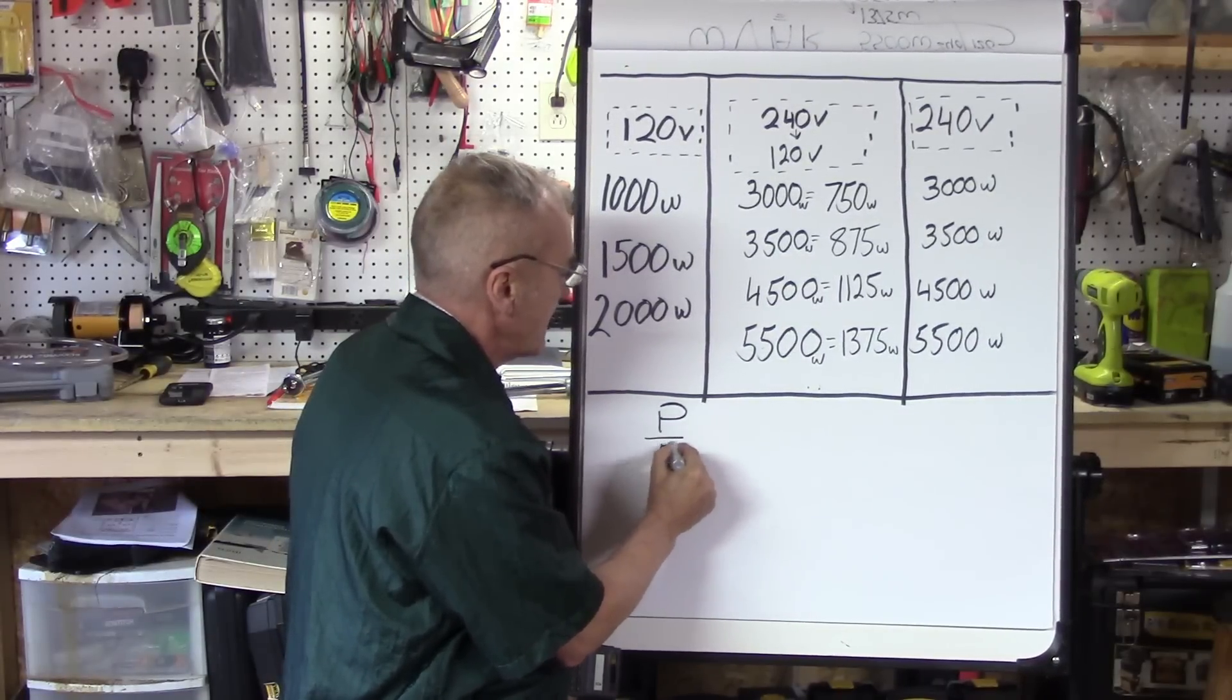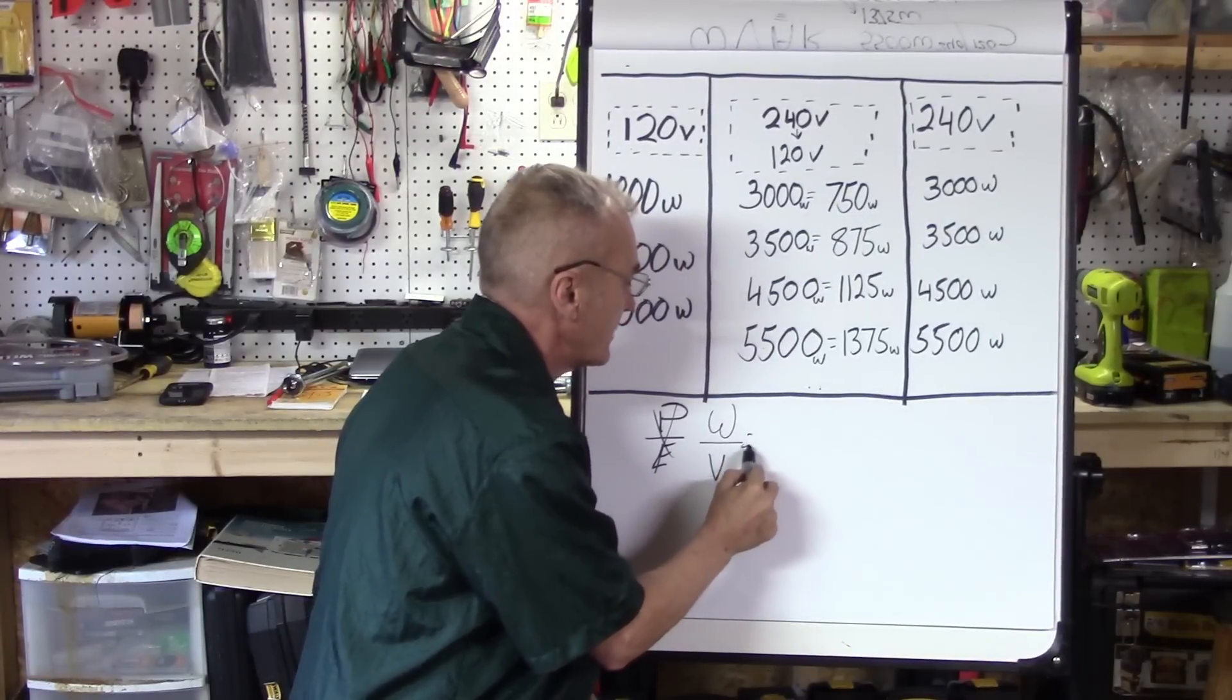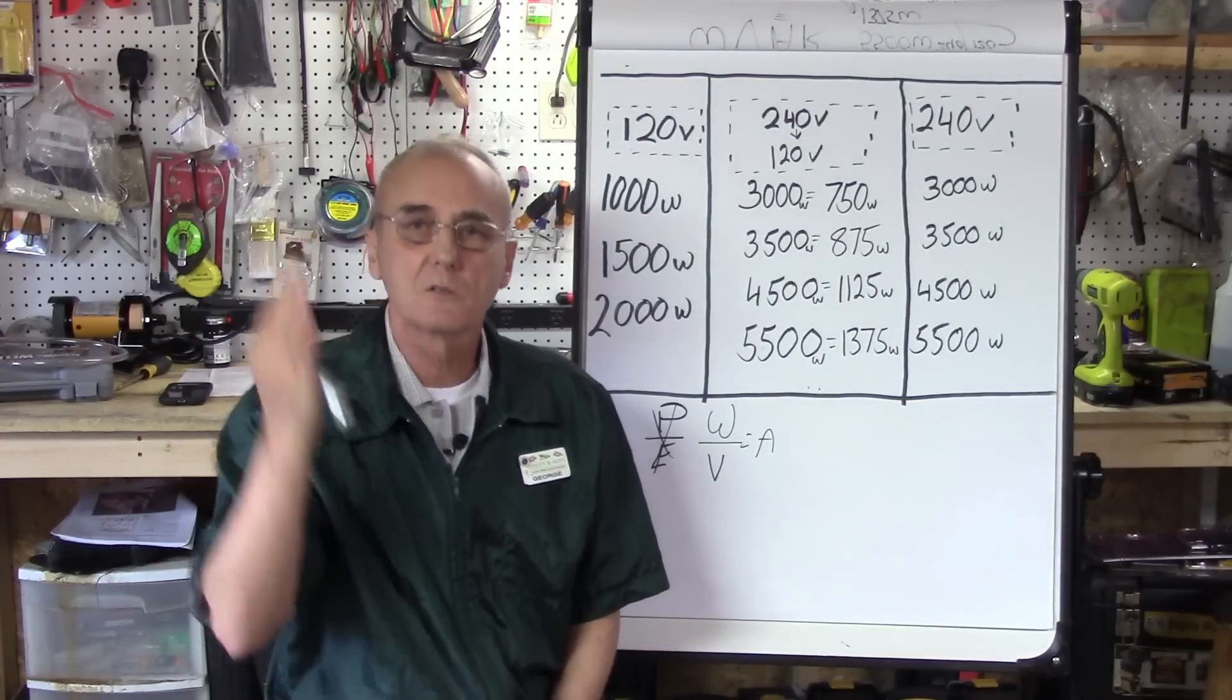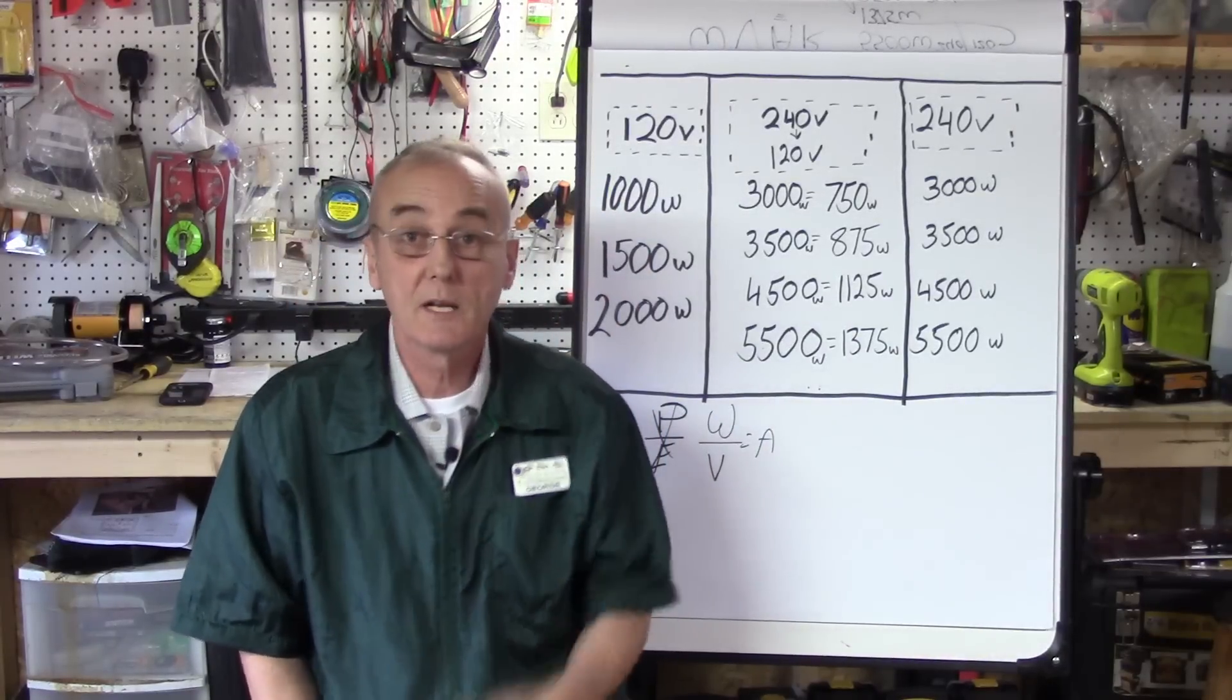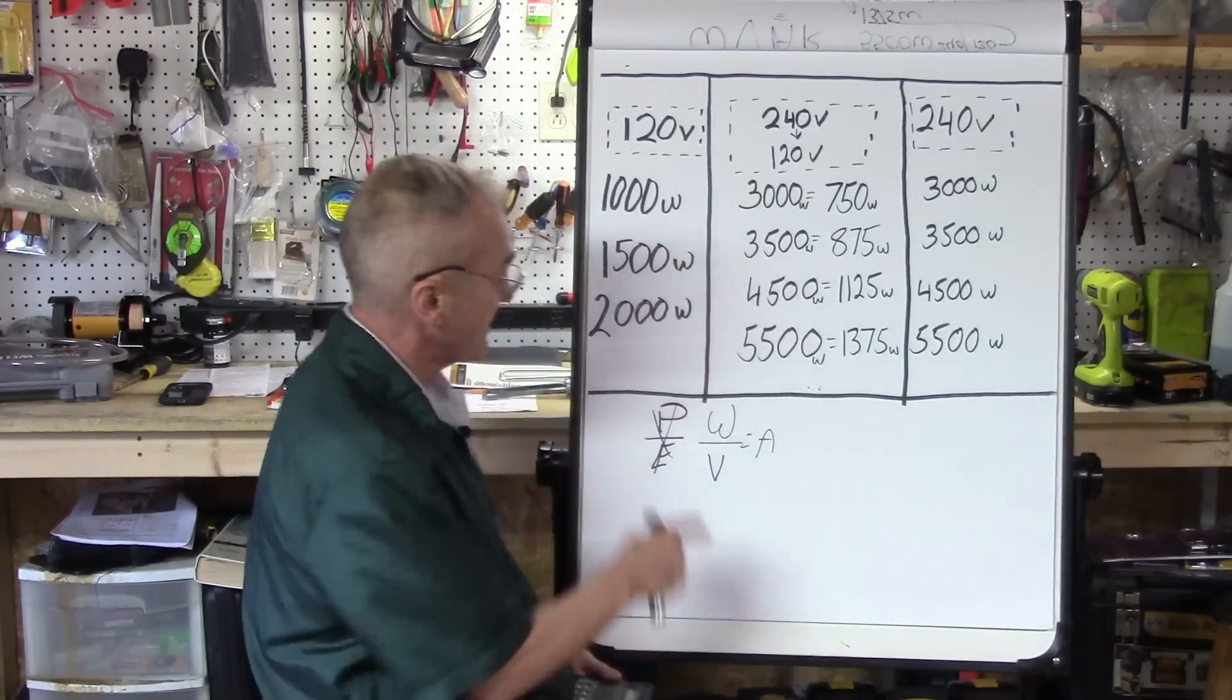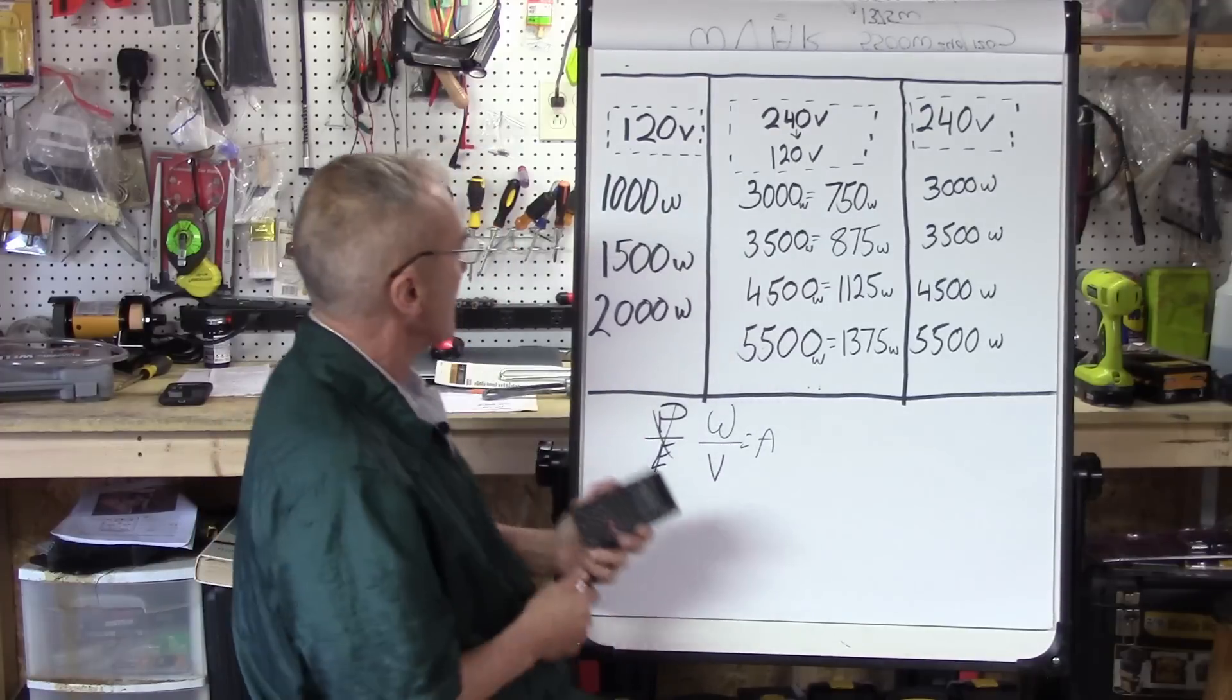P divided by E—remember we changed those letters—wattage divided by voltage equals amps. If you're standing there you go, okay, I know I've got me a 20 amp circuit. Now what combination? Let's say I want to use one element. Let me try the 120 volt, 1500 watt element.